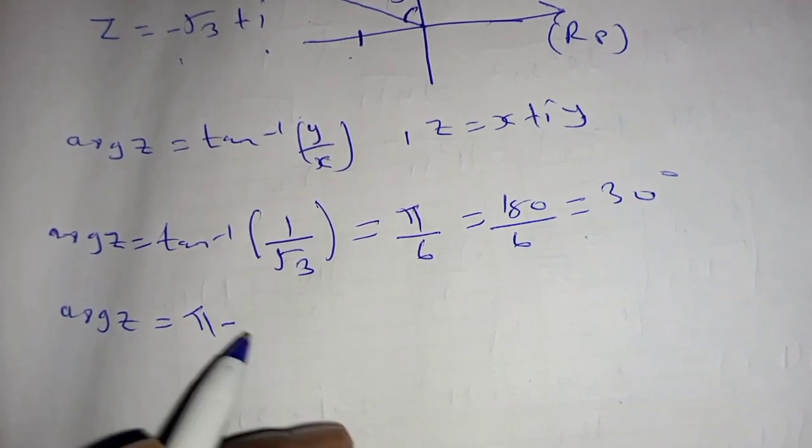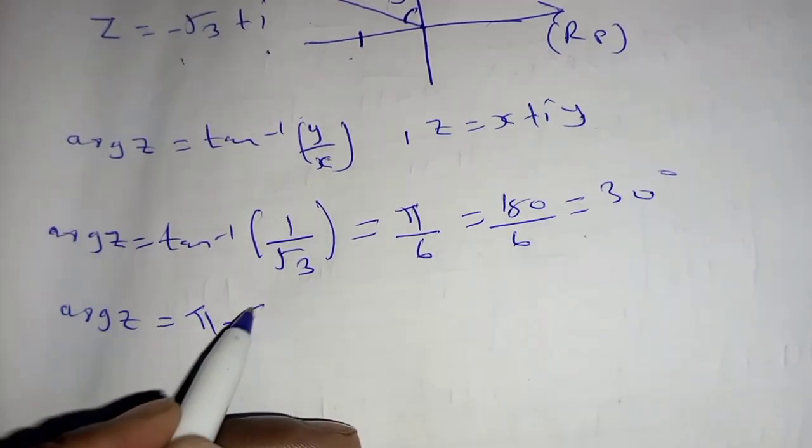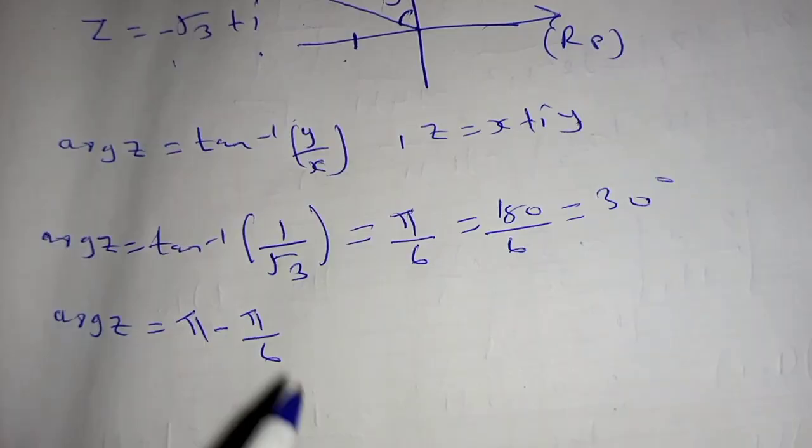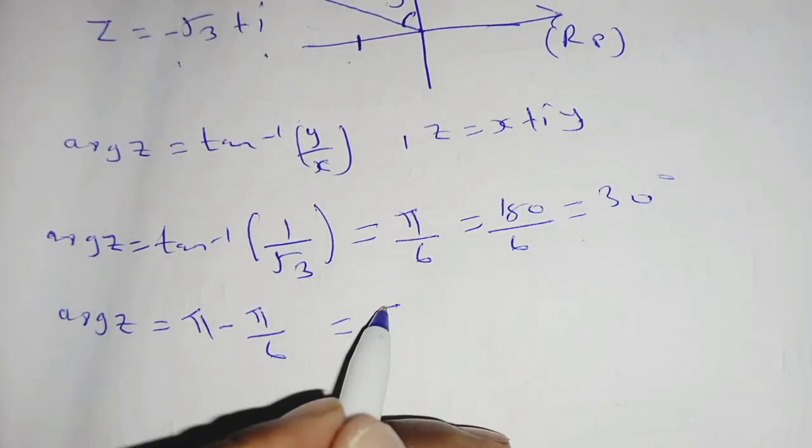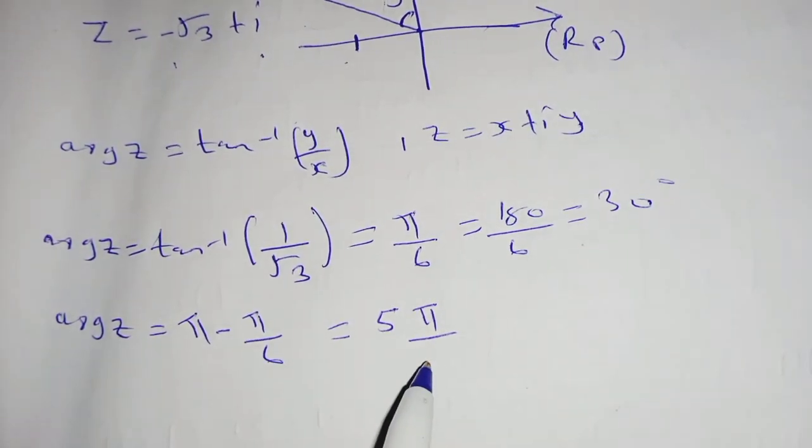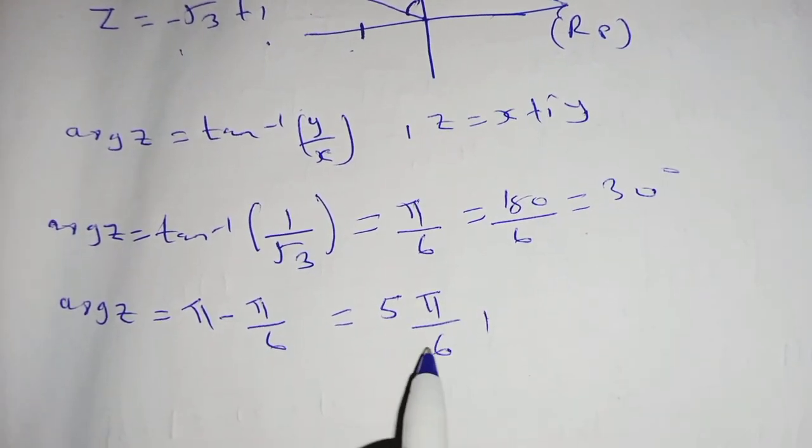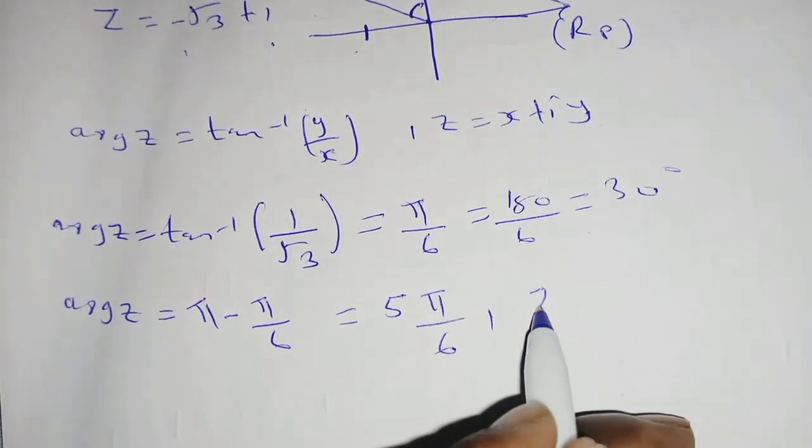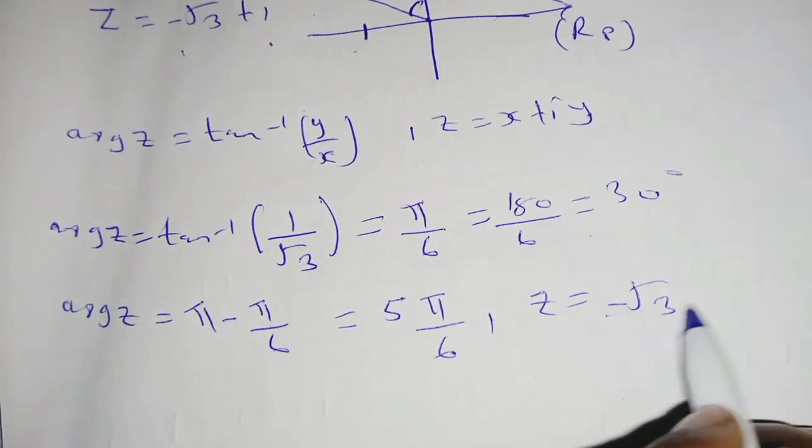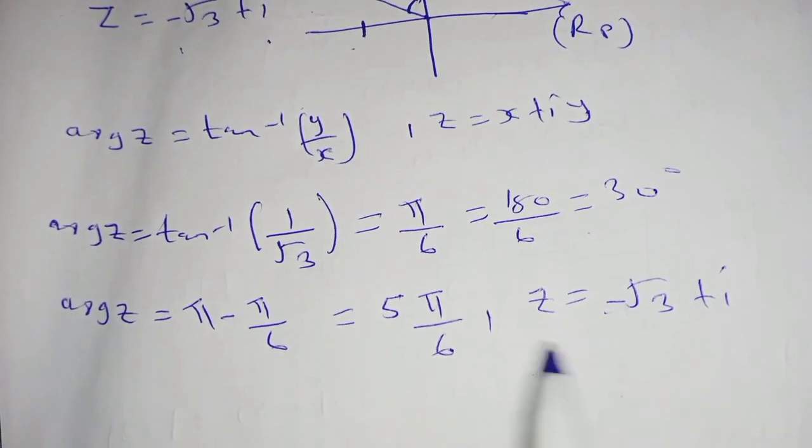Meaning that we have π minus π over 6, which is equal to 5π over 6. So this is the argument of our given equation, where we have z is equal to negative root 3 plus i. That is our argument.